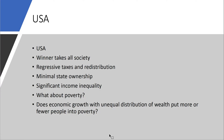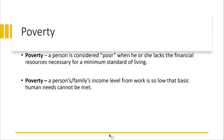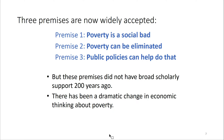So we're going to talk about poverty. A person is considered poor when he or she lacks the financial resources necessary for a minimum standard of living — basically trying to meet human needs: food, shelter, education, health. When we think about poverty today, we generally think of poverty as a social bad that can be eliminated, and there are public policies as a way to do that.